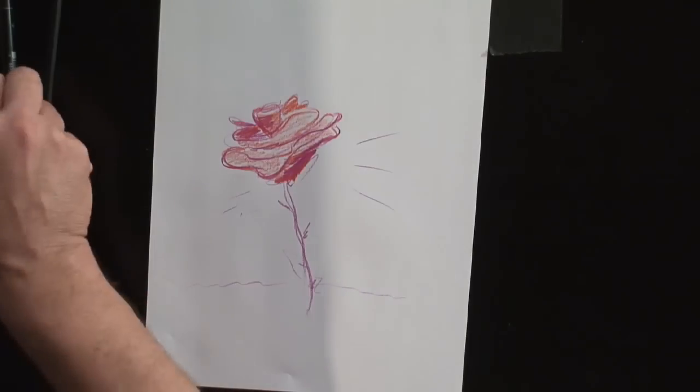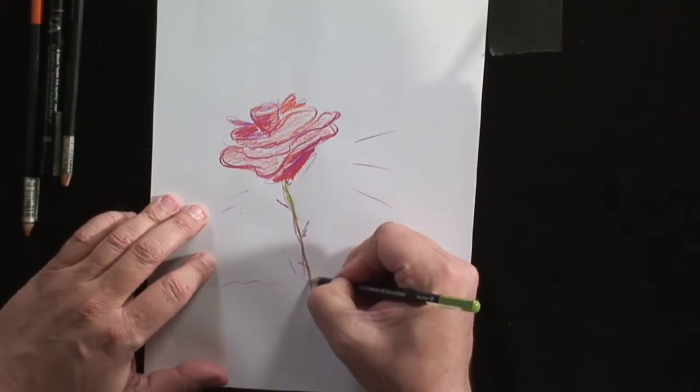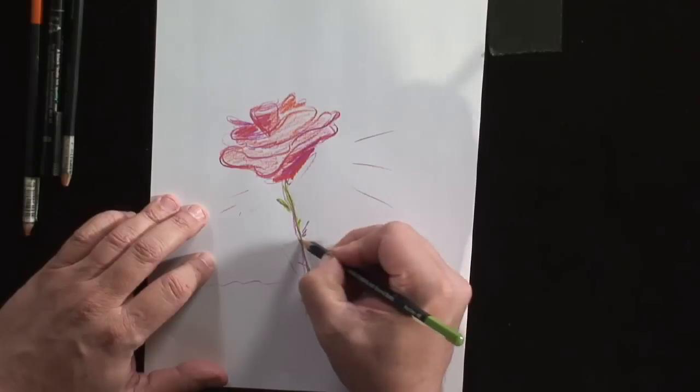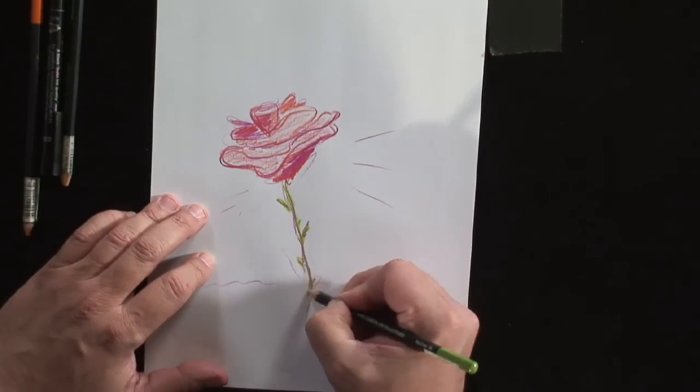Then you have the green stem down here, put some thorns in, sharp thorns.